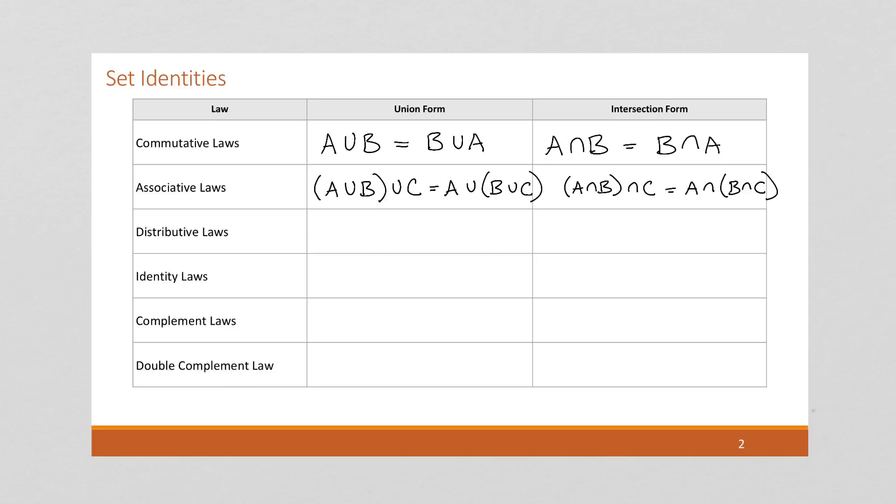Distributive laws, we can distribute. So here if we have A union with B intersect C, notice here the two operations are different. So the associative law works when the operations are the same. The distributive law works when the operations are different. So here if we've got this, we can distribute that A union, so that we have A union B intersect with A union C. I'm running out of space a little bit, but hopefully that makes sense. And similarly we can do this with the intersection form.